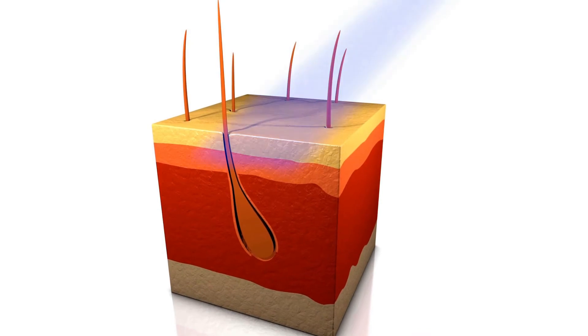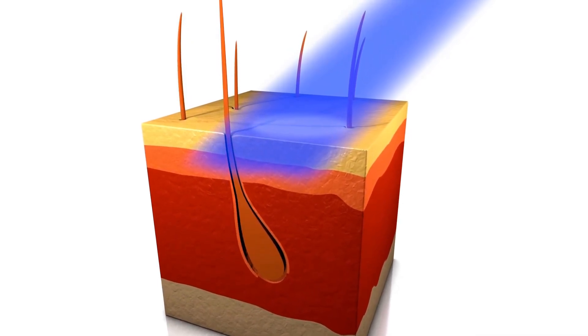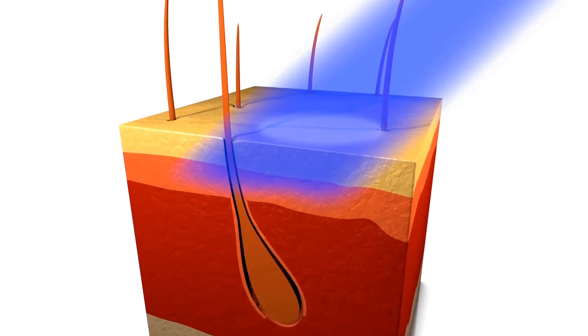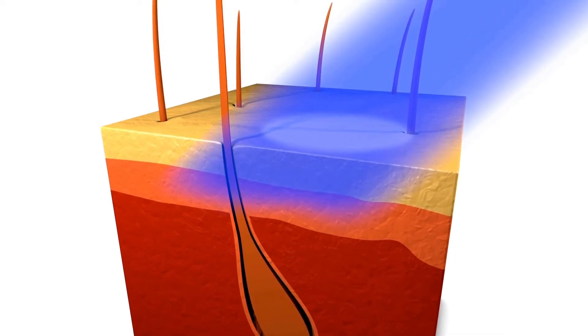UVB rays have a wavelength of 280 to 315 nanometers and impact the epidermis or outer skin layer. The long-wave segment of UVB light also has a special effect on the lower layers of the epidermis, especially the basal layer.